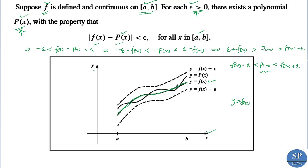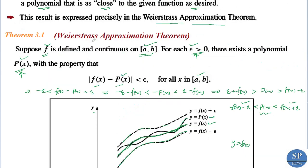Here, f(x) is the main graph. For ε > 0, the graph of f(x) − ε is obtained by subtracting ε from f(x) at each point, and f(x) + ε is the upper boundary. The polynomial p(x) lies between f(x) − ε and f(x) + ε. From this figure we can see that p(x) lies within this band — this is the Weierstrass approximation theorem.